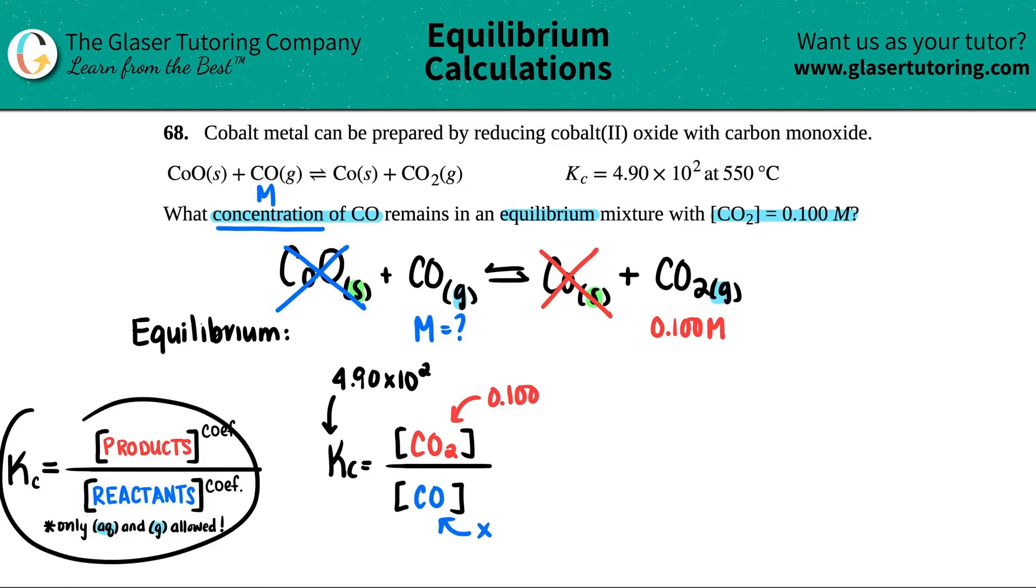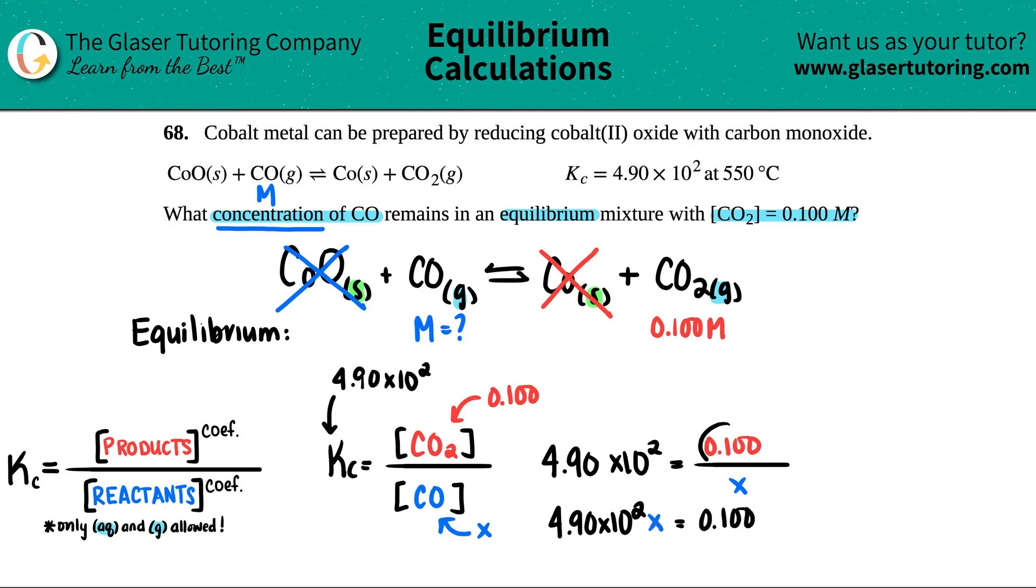Let's plug it in. So 4.90 times 10 to the second equals 0.100 divided by x. And now this is just cross multiplication. If I just do this, it would be 4.90 times 10 to the second, and that's times by x now, and that equals the 0.100 from the top.